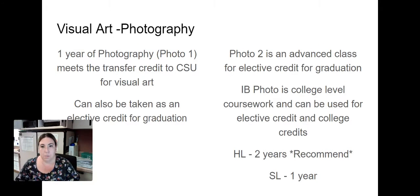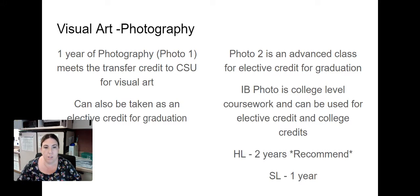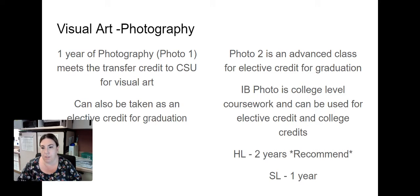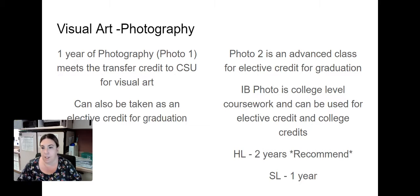Just to explain how photography fits into your child's schedule: students have to take a certain amount of elective credits. If they plan to go to a Cal State University or UC, they need to have one year of visual art, so my class meets both those requirements. My class also leads up to photo two, the advanced part of photo one, and IB photo, which is a weighted class.